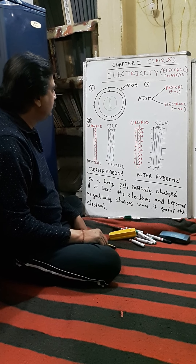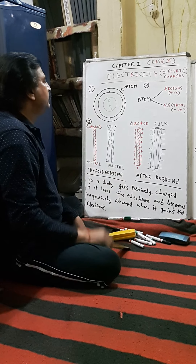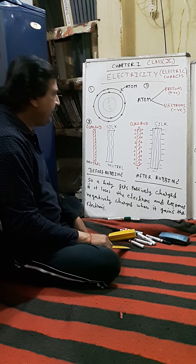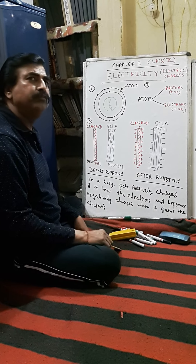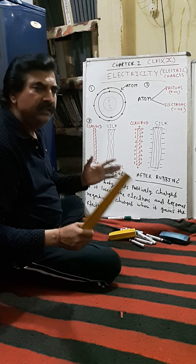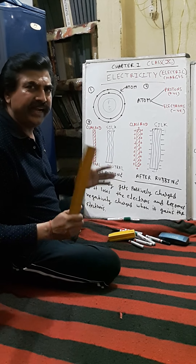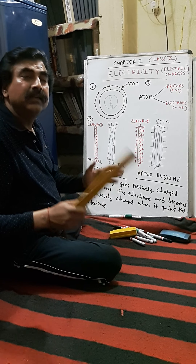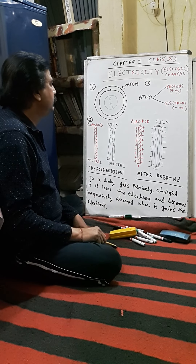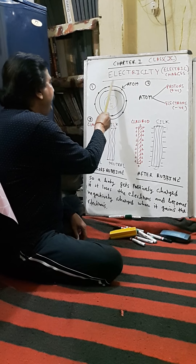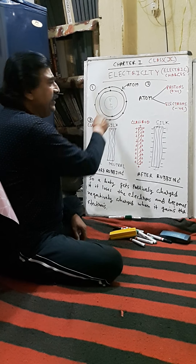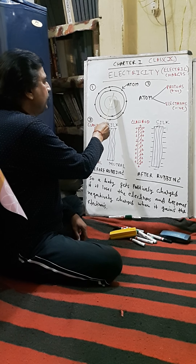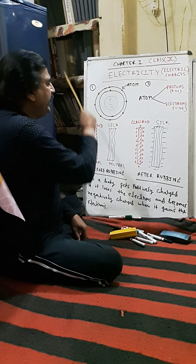We will discuss the structure of the atom. We know that every object in this world is made up of tiny particles called atoms. The atom is made up of protons, neutrons and electrons.